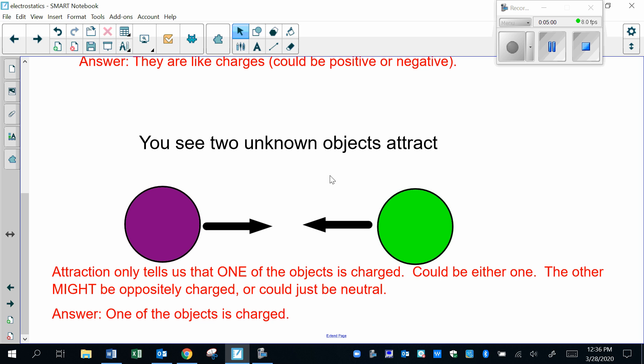It doesn't matter if it's positive or negative. We just talked about the previous slide showing how both neutral pink objects were attracted to both positives and negatives. So it doesn't matter whether the purple is positive, negative, or the green is positive, negative, and the other one's neutral.